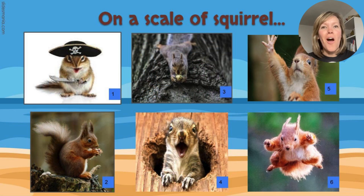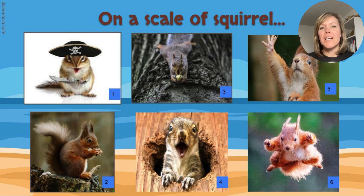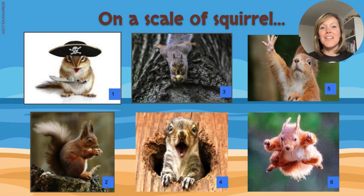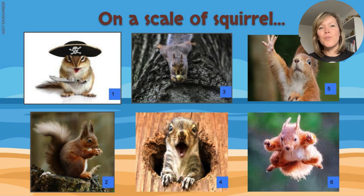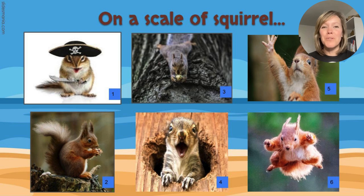Start every day off with an 'On a Scale of' slide. You can put this up on your interactive board or screen, whatever is easiest for your students. Have them decide — either showing with their hands or digitally — what their feelings are for the day. This one is an example of 'on a scale of squirrel,' going with a pirate theme. You could do on a scale of fast food, tacos, or candy. Let the kids help you decide — that's going to help it be more engaging. Take a moment to have them share why they're feeling that way, then move right in to start your day.